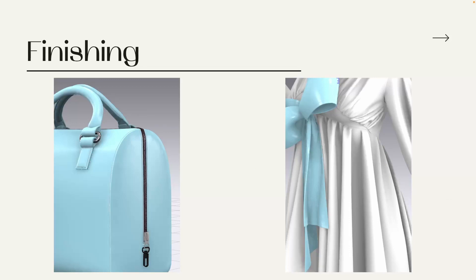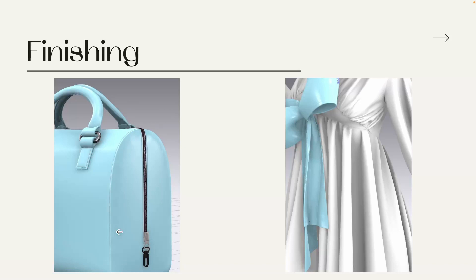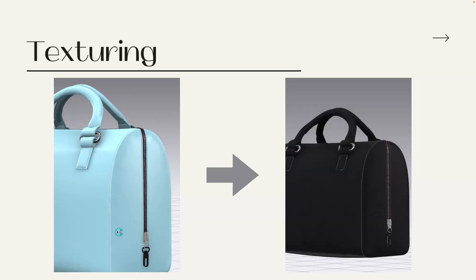The second stage is called finishing. In the finishing stage we add materials, trims, and detailing to our design so it looks realistic. For example, on a bag we add hooks, zippers, and top stitch — all these things make our garment look much more realistic. The third stage is texturing, where we take our object and give texture to it.